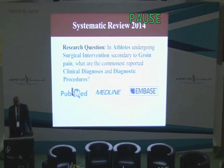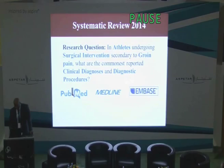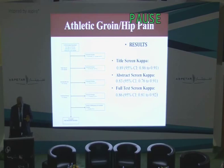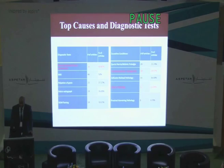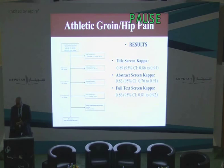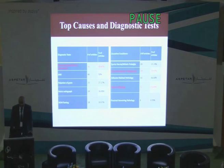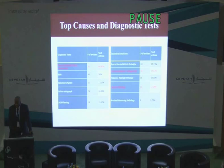For this specific conference, two months ago we started a systematic review asking the specific question: in athletes undergoing surgical intervention secondary to groin pain, what are the commonest reported clinical diagnoses and diagnostic procedures? We searched three search engines and here are our preliminary results. We had 3,500 studies to review, and 83 were included with excellent agreement in screening and abstraction. General physical examination was reported to be a crucial step in diagnosis in most cases. The commonest cause of surgery in the athlete was sports hernias, but when you look at intra-articular hip conditions — labral tears and FAI — they account for 30%, making that the most common single category requiring surgery.